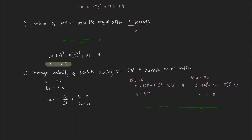If this point here is the origin, at T₀ the particle is here at point 1. At T₁ equals 0, it's on the right side of the origin, so S₁ equals 4 meters. But then at T₂, 5 seconds, the position of the particle S₂ is now negative 21 meters, so the movement was towards the left. So V average is equal to S₂ negative 21 meters minus S₁ 4 meters, divided by 5 seconds minus 0 seconds.